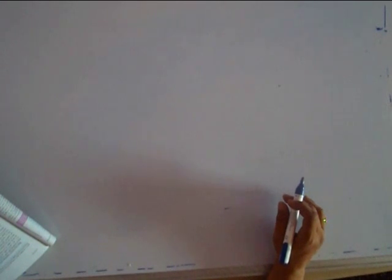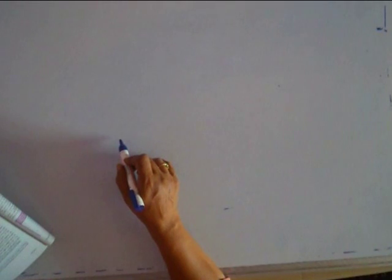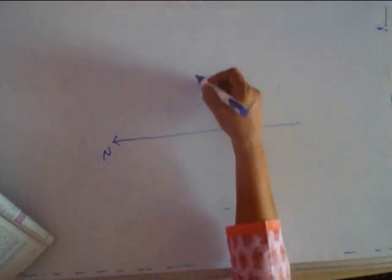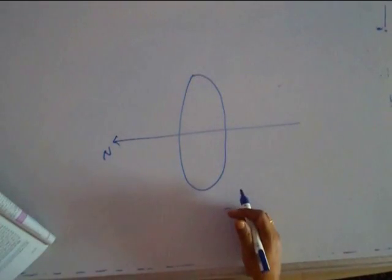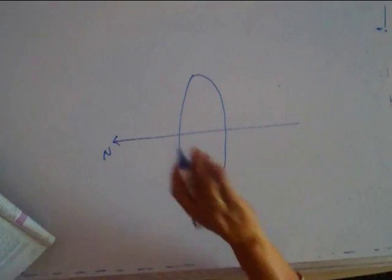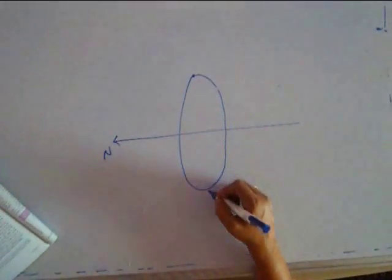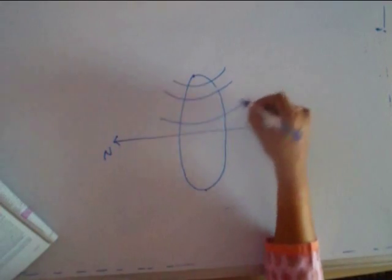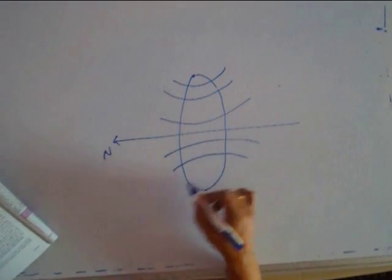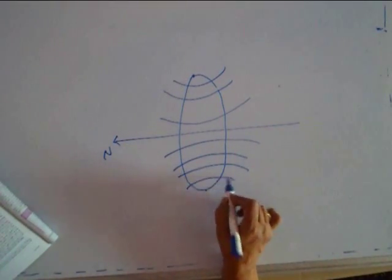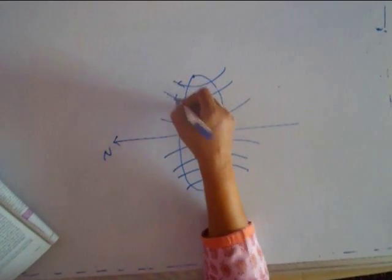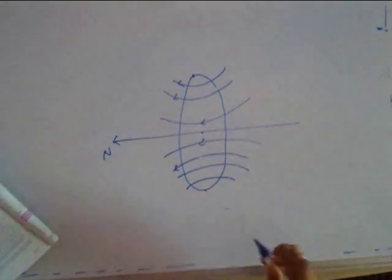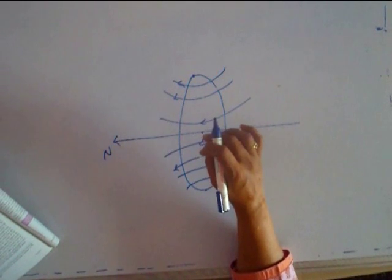If I have to show the magnetic lines of force, there is another way of showing in two dimensional. Suppose this is north and this is the south direction and I have a coil perpendicular to the paper such that the one end is coming out of the paper, other end is going in the paper. Then I will have these concentric circles whose radius is getting bigger and bigger at the two ends, this is the direction of the magnetic field.